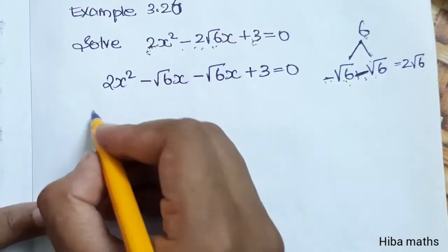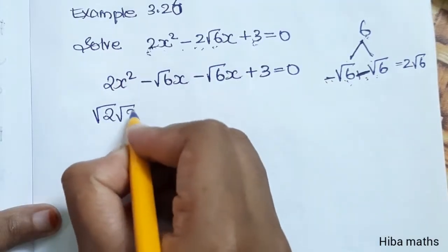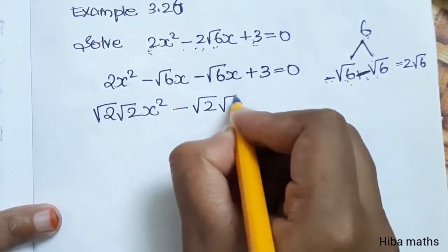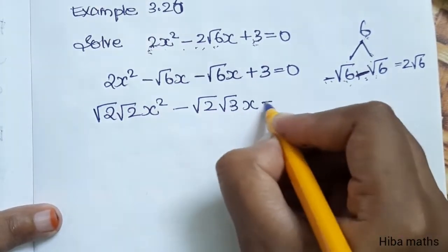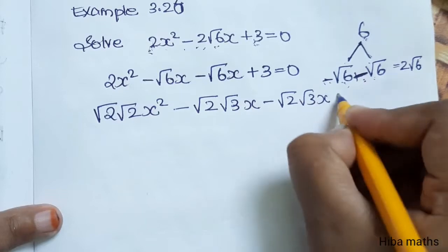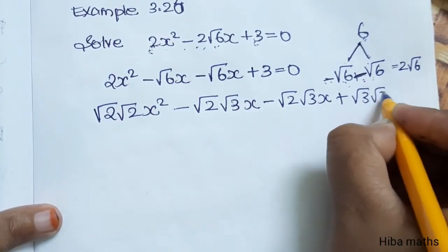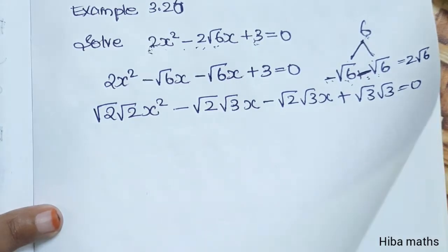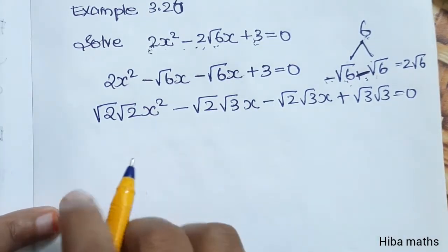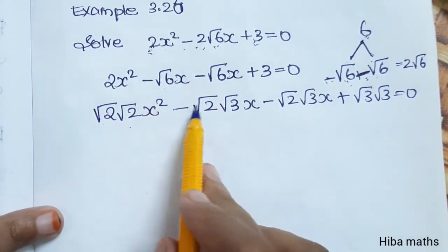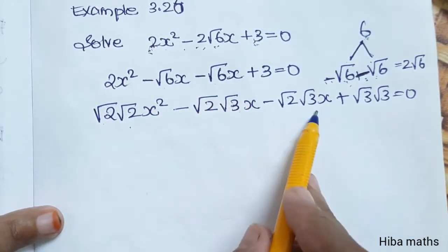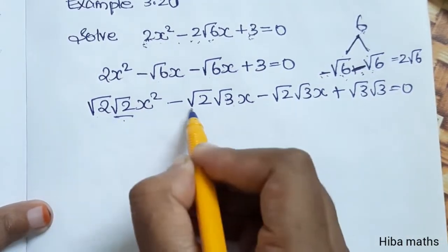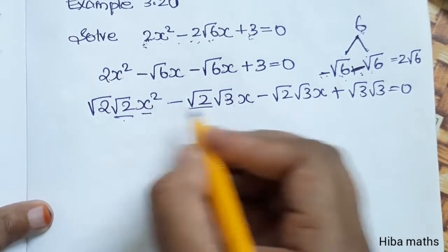Now rewrite each coefficient: 2 = √2 × √2, and √6 = √2 × √3. Again, √2 × √3 and 3 = √3 × √3. So 2 is √2 into √2, root 6 is √2 × √3, and 3 is √3 × √3.